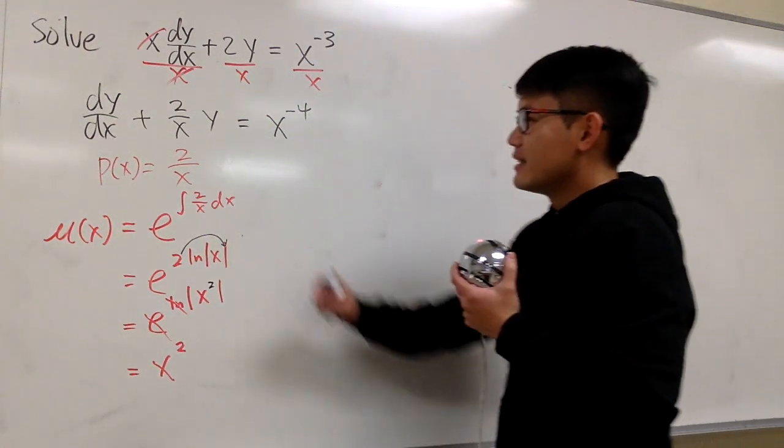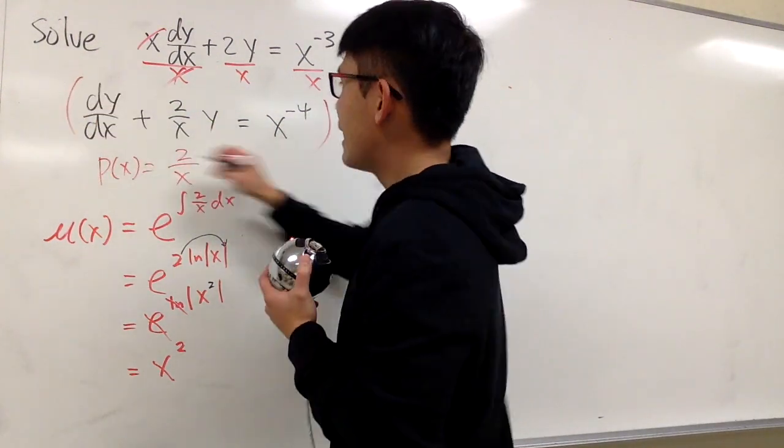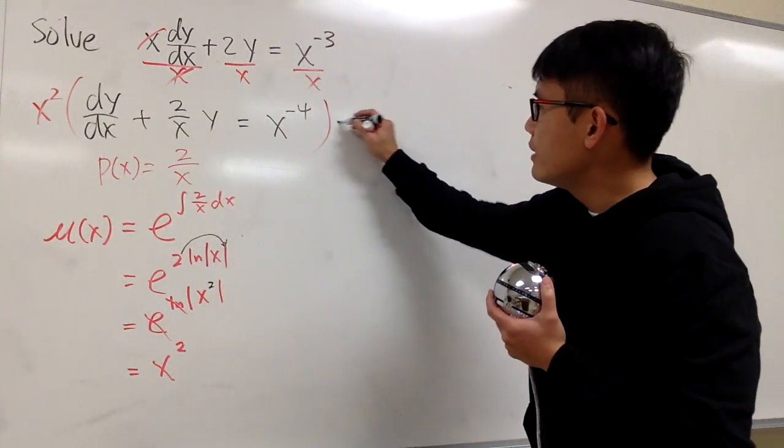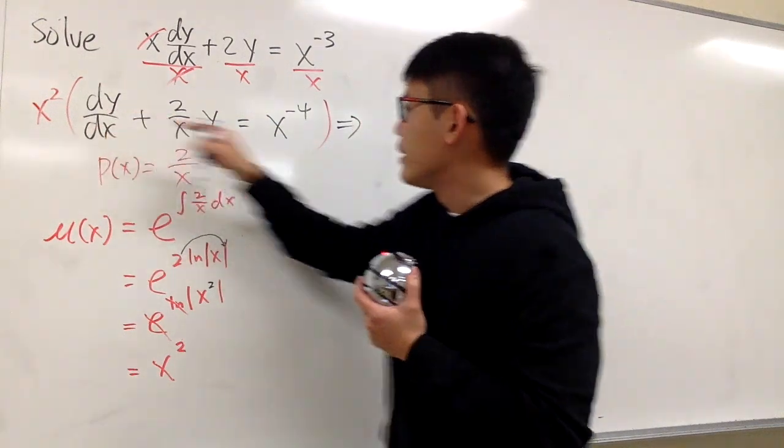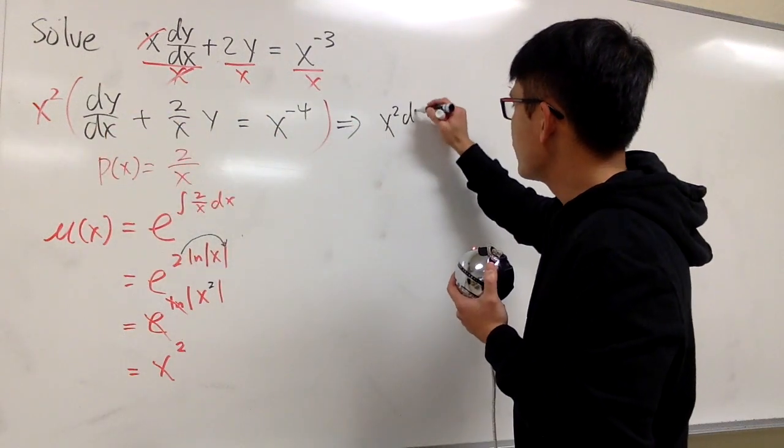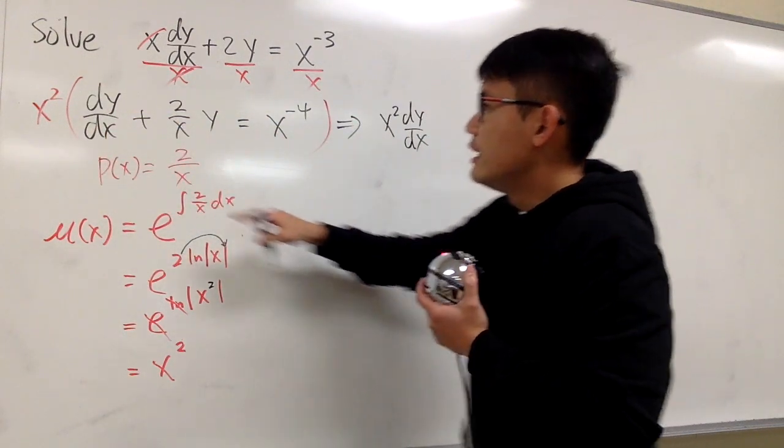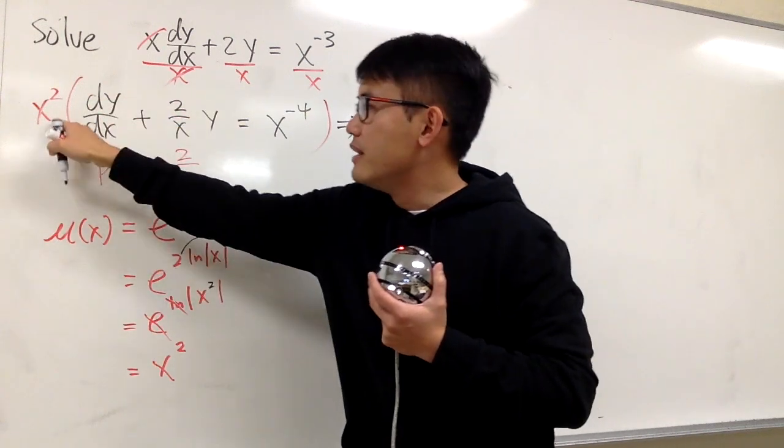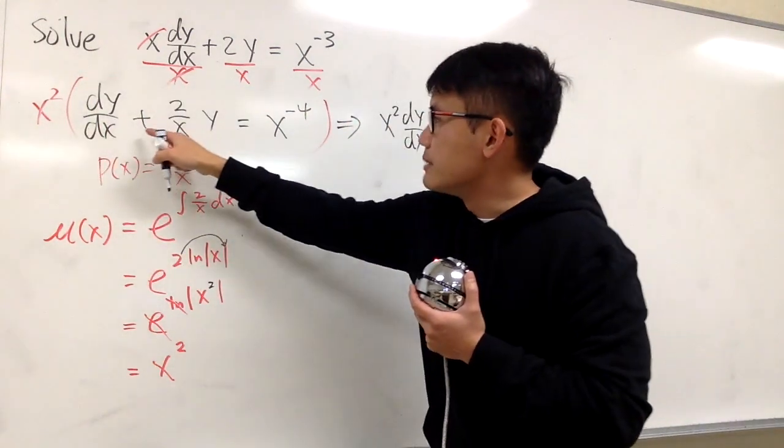All right. Right here, we'll multiply everything by x to the 2nd power, and we will have x squared times that, right? x squared divided by x, and x squared times 2 over x, one of the x will cancel out, and this will stay on the numerator. So this is plus 2x.